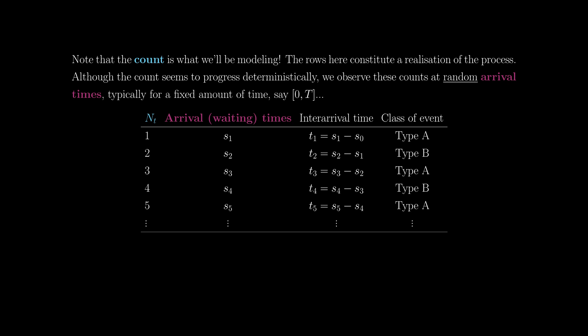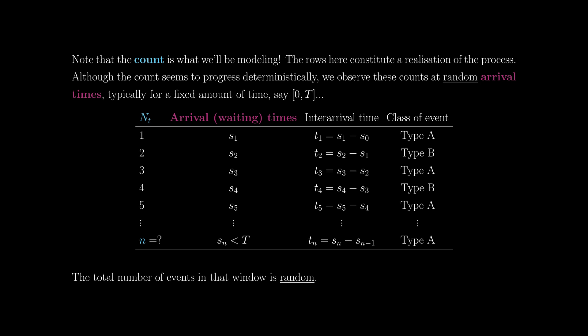The count is what we're modeling. If you look at that column, you'll see it just goes 1, 2, 3, 4, 5, and it can only go up — so it seems a bit predictable. But in the real world, we typically observe processes for a fixed window of time, say 0 to capital T. That means the number of events that happen in that window will be random — the total number of rows in this table will be random. We're modeling the count, specifically the number of events in a particular fixed window. The other random components are the arrival times and inter-arrival times.